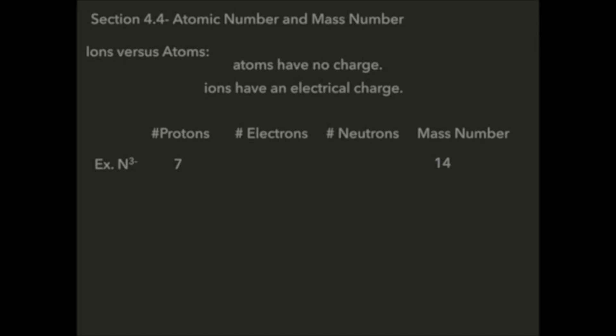Now the tricky part is figuring out the number of neutrons. Well the mass number is the number of protons plus the number of neutrons. Those are the two subatomic particles that contribute to mass. The electrons do not.